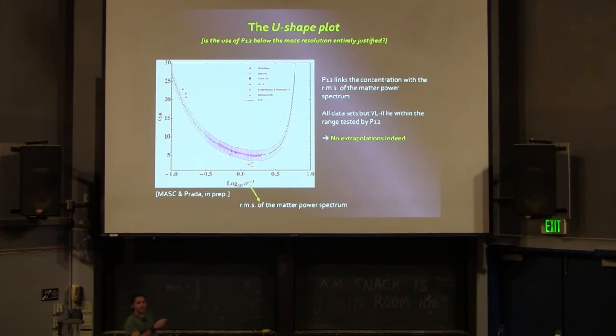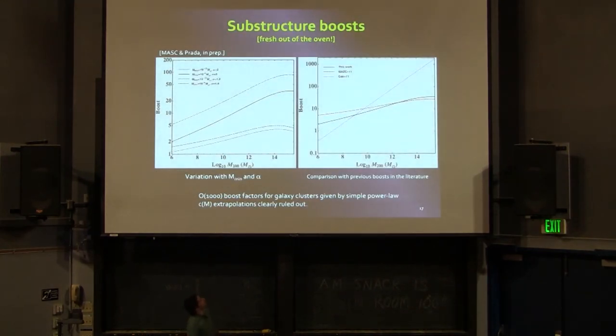This is another way to plot it. This is what we call the U-shaped plot. Here I'm just plotting the concentration versus the inverse of the RMS of the power spectrum, of the sigma, and the same data points. By the way, the dashed line corresponds to the region in this parameter space where the P12 model was not tested. As you can see, all data points, but only the Via Lactea 2 guys are in the region of the parameter space where the P12 model was proposed, for which the model was proposed. So indeed we are not doing this kind of strong extrapolations to small halo masses.